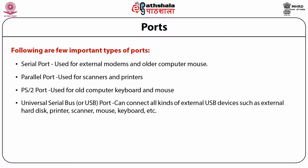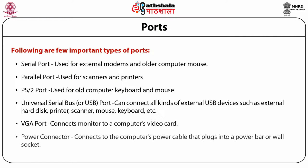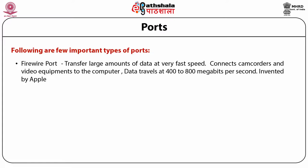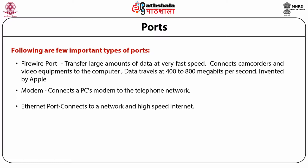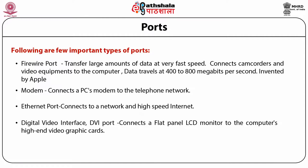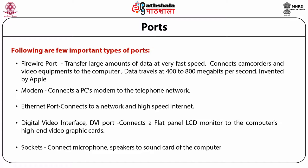USB ports connect external hard disks, printers, scanners, mice, keyboards, and more. The VGA port connects the monitor to the computer's video card. The power connector connects to the computer's power cable that plugs into the power bar or wall circuit. The FireWire port transfers large amounts of data at very fast speeds — 400 to 800 Mbps — connecting camcorders and similar video equipment; invented by Apple, it comes in 4-pin, 6-pin, and 9-pin variants. A modem port connects PCs to the telephone network. The Ethernet port connects the network to high-speed internet. The DVI (digital video interface) port connects a flat panel LCD monitor to a high-end video graphics card. Other sockets connect microphones and speakers to the sound card.